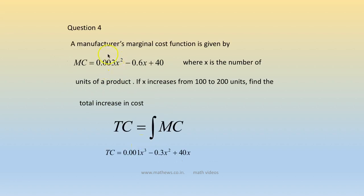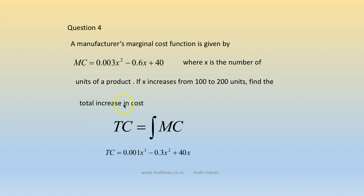Question 4: a manufacturer's marginal cost function is given by marginal cost = 0.003x² - 0.6x + 40, where x is the number of units of a product. If x increases from 100 to 200 units, find the total increase in cost.